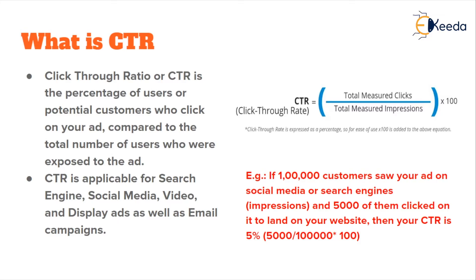So your click-through ratio would become about 5%, with the given formula: 5,000 divided by one lakh, multiplied by 100. Very easy to calculate, and yet the most critical thing you need to track for any digital marketing campaign. In the case of email campaigns, the CTR can become total measured clicks divided by total measured open rate — meaning the number of customers who opened the email becomes the denominator, and the number of customers who clicked on the link in the email to land on your webpage becomes the total measured clicks. The number of customers who received the mail is not the denominator; those who opened it and then clicked are the ones that feature in the CTR calculation.